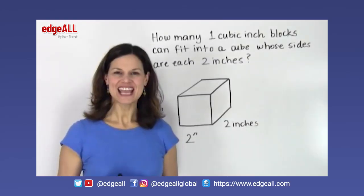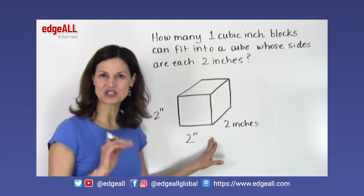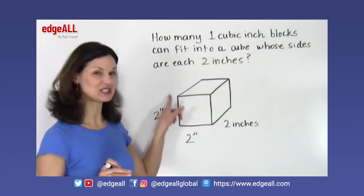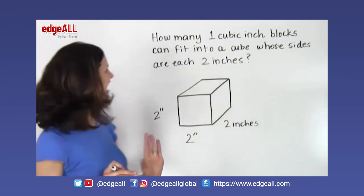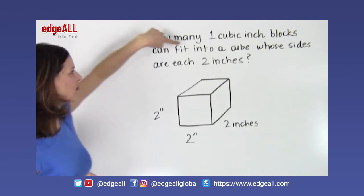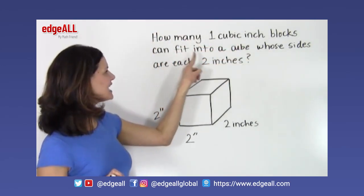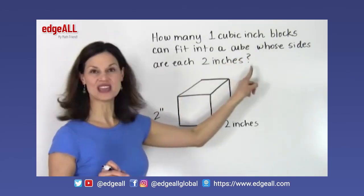If we take a look at a cube that's just a little bit larger than our 1 inch by 1 inch by 1 inch cube, and we have a cube that's 2 inches by 2 inches by 2 inches, let's look at what happens here. We are asked here how many 1 cubic inch blocks can fit into a cube whose sides are each 2 inches.